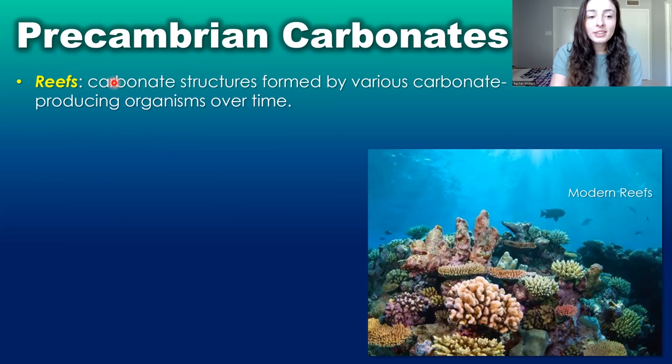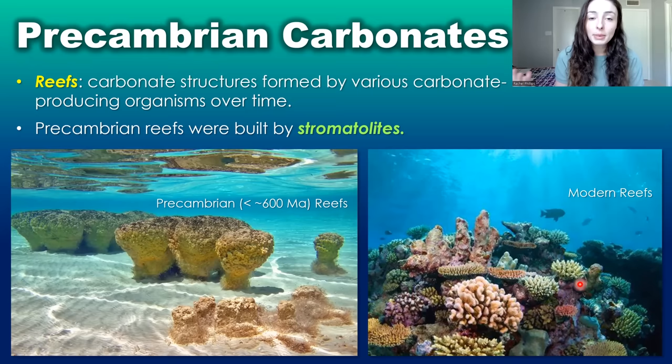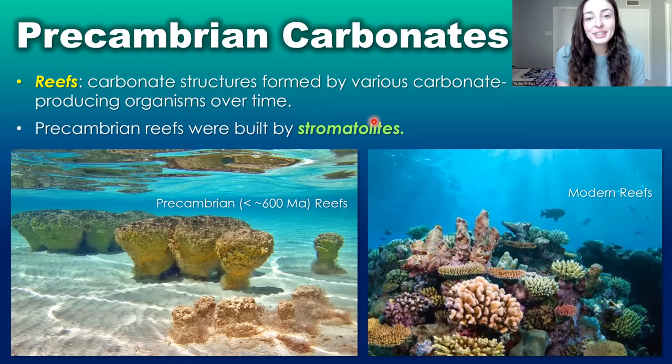The last type of Precambrian carbonate deposits are reefs. Reefs in general are carbonate structures formed by various carbonate-producing organisms over time, but Precambrian reefs look very different from modern reefs. Instead of being dominated by corals, sponges, or bryozoans, they were dominated fully by stromatolites — because that was all that was around until around 600 million years ago, when the first sponges and Ediacaran fauna began to evolve and build their own reefs.